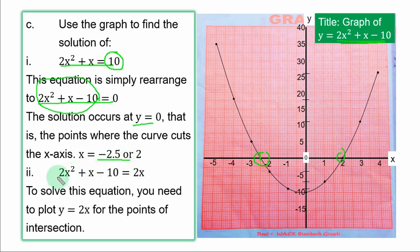Roman figure 2: 2s squared plus s minus 10 equal to 2s. No matter how you simplify or adjust this equation, you cannot get the one that you have plotted. 2s is a linear equation. So this question is not direct. You are plotting a quadratic and a linear graph on the same graph sheet. So you need to prepare a table of value for y equal to 2s.